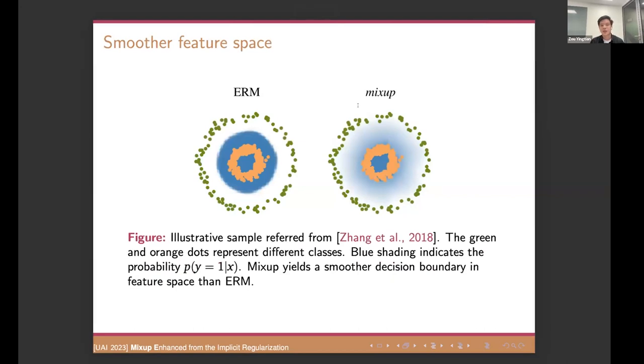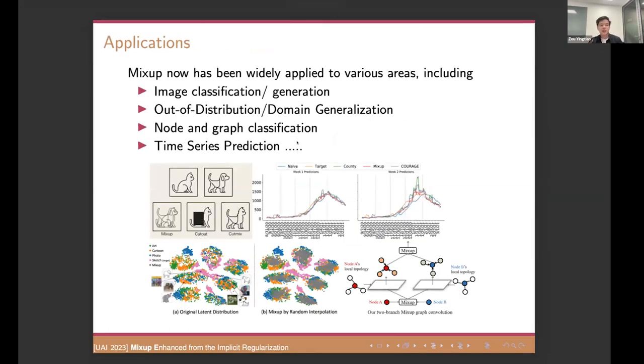So in this way, the decision boundary in the future space learned by Mixup is smoother. So as we can see, the toy example here, we're going to classify from the green dots to the orange dots. So the blue shading is actually the probability to be classified as the orange dots. It's easy to understand because Mixup learns any linear interpolation between two categorical samples. So we can get very smooth decision boundaries in the future space compared to ERM.